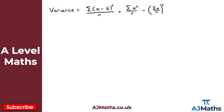In terms of the formula book, you aren't actually given the variance formula. What you are given is the formula for the standard deviation. The standard deviation is represented with the Greek letter sigma — we've now mentioned sigma twice: this is lowercase sigma and this is uppercase sigma.